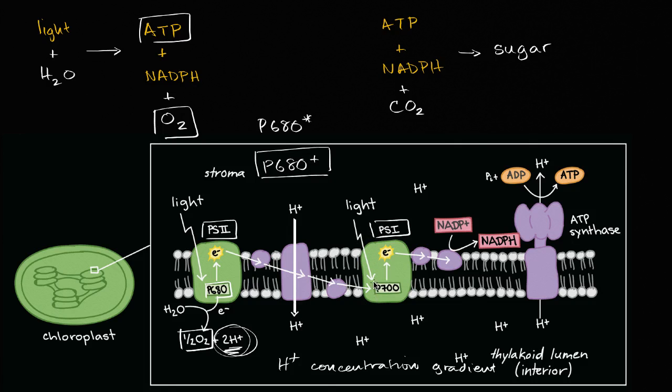In photosystem I, there's another chlorophyll A pair called P700, and that's because it optimally absorbs light of a wavelength of 700 nanometers, and you have something similar that happens.